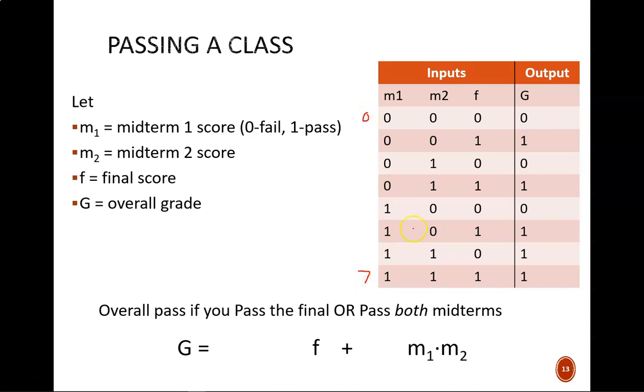To complete the output column, there are two main components to consider. The first is if the student passes the final exam. In every case where F equals 1, then G should equal 1. The second component is if the student passes both midterm projects. In every case where M1 and M2 equals 1, then G should equal 1. All remaining rows have G equals 0.